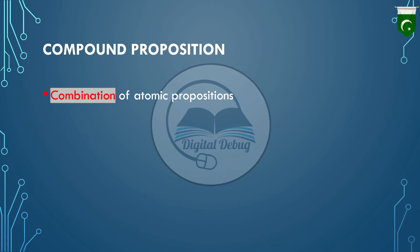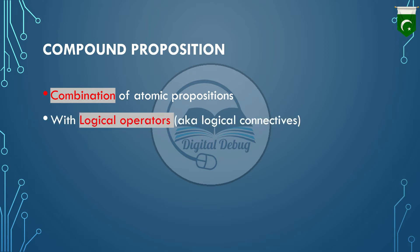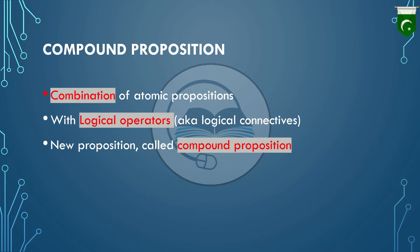In a compound proposition, we use logical operators, which we call logical connectives. A new proposition created with the help of logical operators and a combination of atomic propositions is called a compound proposition.